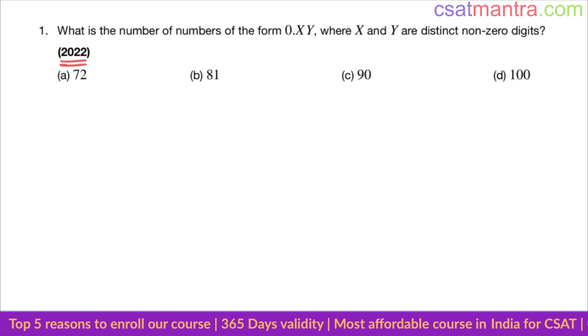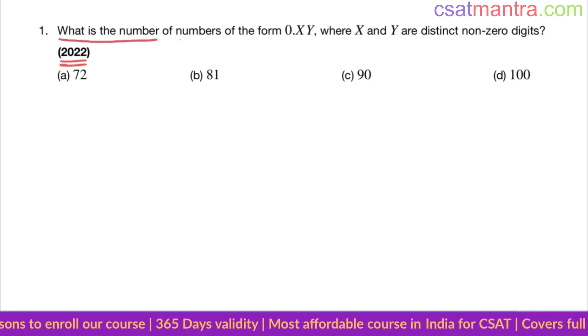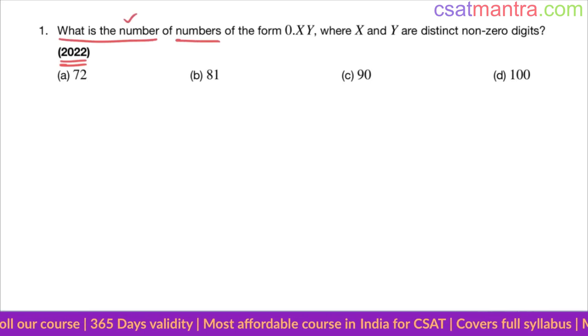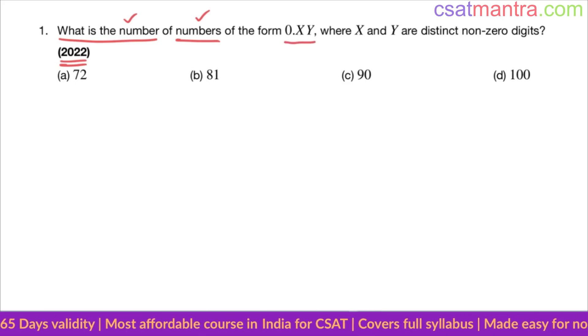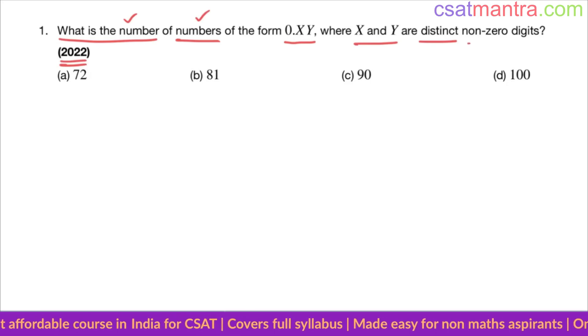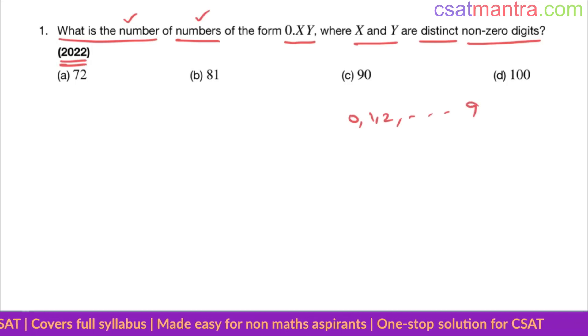This question is very easy. What is the number of numbers, count of the numbers, of the form 0.XY where X and Y are distinct, different, non-zero digits? We have 10 digits in mathematics, my friends. These are 10 digits. Every number in mathematics is formed using these 10 digits.